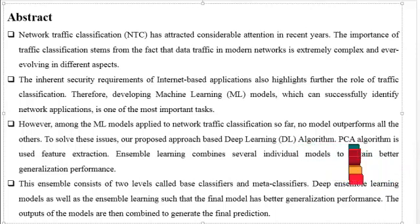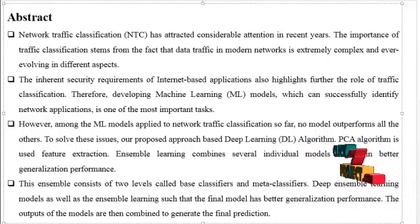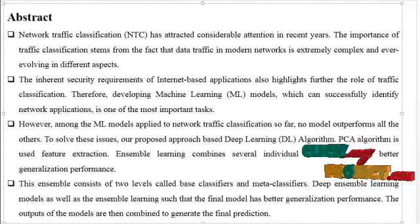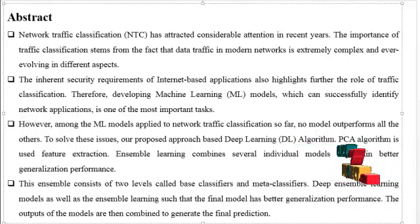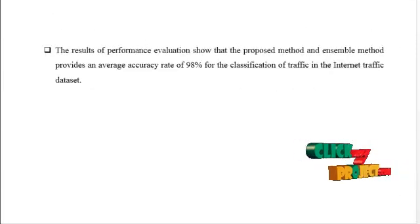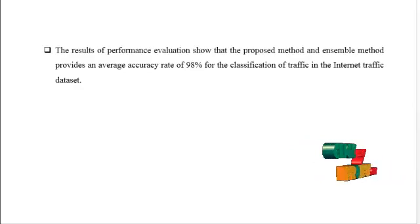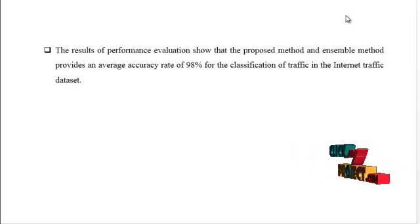To solve this issue, our proposed approach is based on a deep learning algorithm. PCA algorithm is used for feature extraction. Ensemble learning combines several individual models to obtain better generalization performance. This ensemble consists of two levels called base layers and meta classifiers. The deep ensemble learning model ensures the final model has better generalization performance, and the outputs of the models are combined to generate the final prediction. The performance evaluation shows the proposed ensemble method provides an average accuracy rate of 98% for classification of traffic using the network internet traffic dataset.